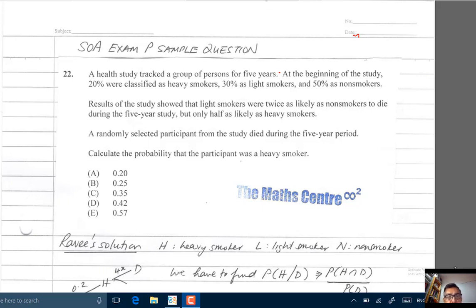SOA is the Society of Actuaries. We are looking at a sample question for Exam P which you will find on the SOA website. The question is number 22.